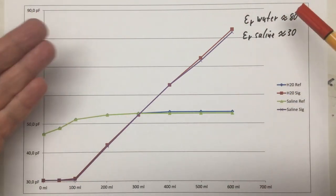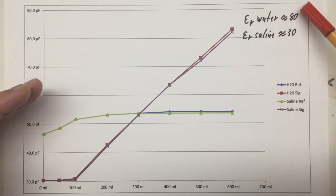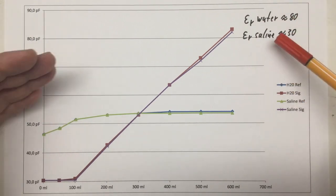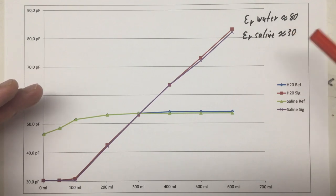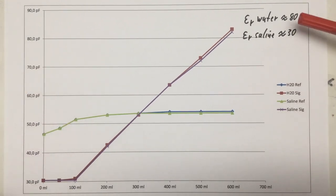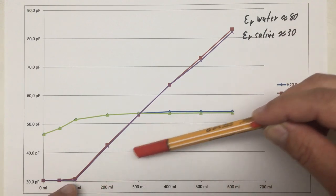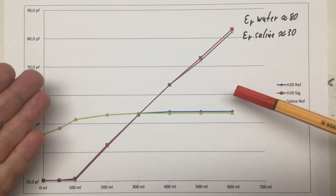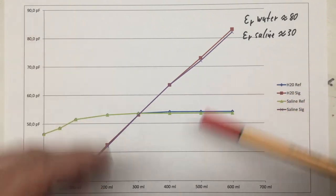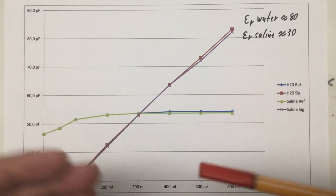While water is supposed to have a relative permittivity of 80, saline is supposed to have a relative permittivity of about 30. So we would expect for saline much lower capacitance readings that we don't get. Have we broken physics?